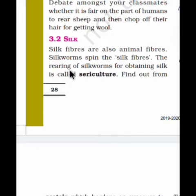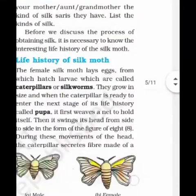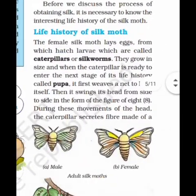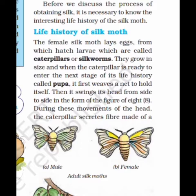Rearing means growing the silkworm by providing them shelter, food, and proper breeding facilities. Find out from your mother, aunt, or grandmother the kinds of silk saris they have and list them — you are easily able to observe silk saris of the ladies around you.